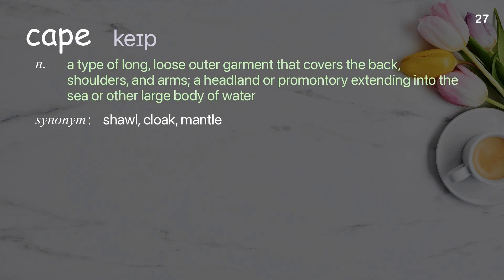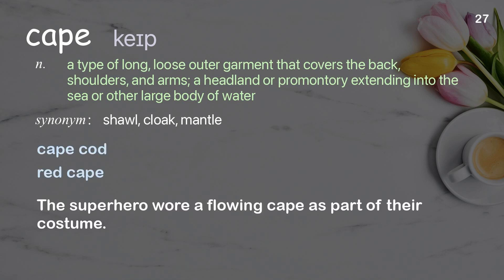Cape: A type of long, loose outer garment that covers the back, shoulders, and arms. Also, a headland or promontory extending into the sea or other large body of water. Examples: Cape Cod, Red Cape. The superhero wore a flowing cape as part of their costume.